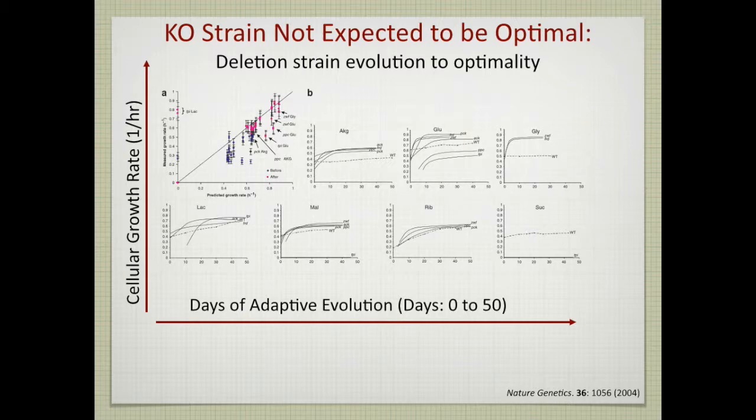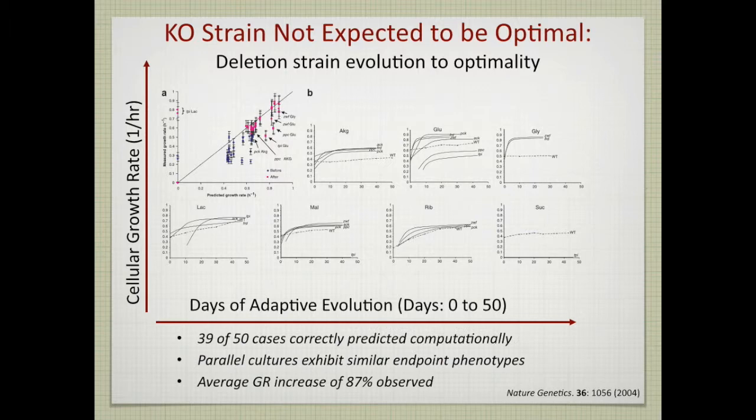And that little panel in the top left shows the comparison of measured growth rate and the predicted growth rate. And the blue dots are the starting points, which will be the MOMA predictions, and the pink dots are the end points, which are the FBA predictions. So these kind of studies have actually shown that these sorts of predictions, and this is a pretty rigorous test of these sorts of predictions, they hold up pretty well by and large, not always, but they are often dead on.